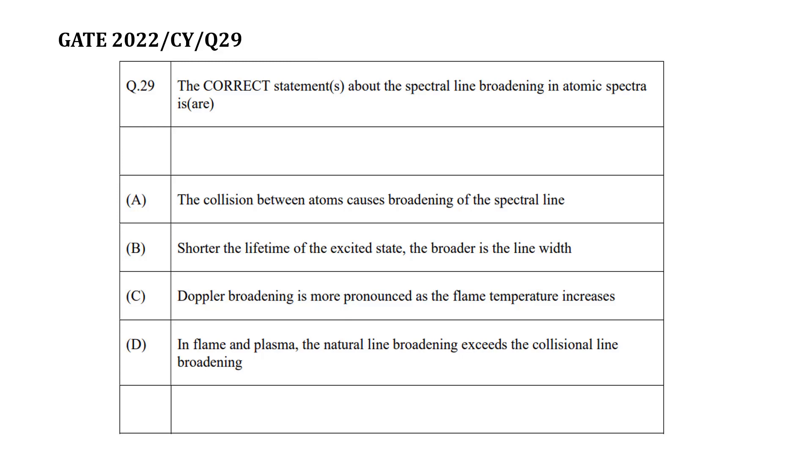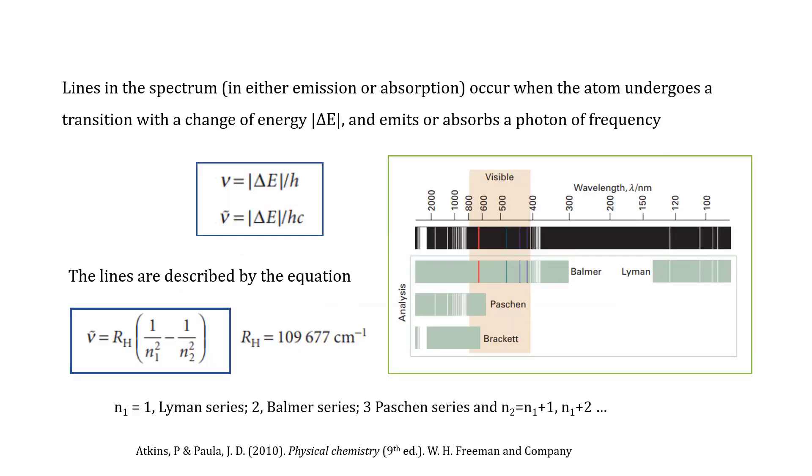First we will check what is atomic spectra and then we will go to spectral line broadening in atomic spectra. Atomic spectra occurs when the atom undergoes a transition with the change of energy delta E and emits or absorbs a photon of frequency delta E by h.